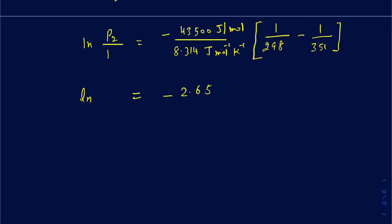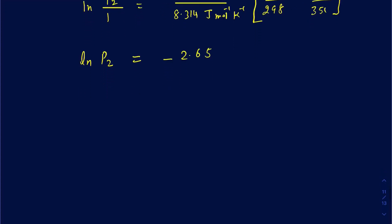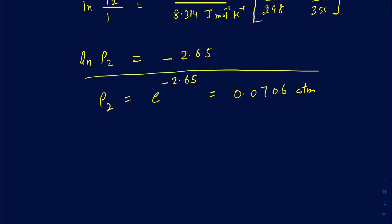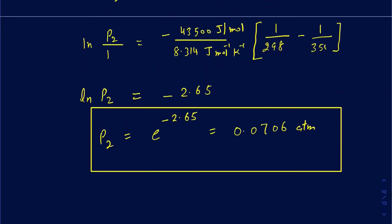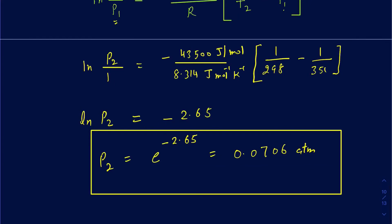To solve for P2, take e to the power of negative 2.65, which gives 0.0706 atmosphere. So the vapor pressure at 298 Kelvin is 0.0706 atm. When the temperature is decreased from 351 Kelvin to 298 Kelvin, the vapor pressure drops from 1 atmosphere down to 0.0706 atmosphere — exactly as expected when temperature decreases.